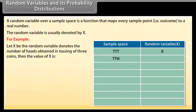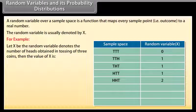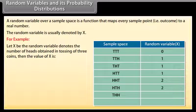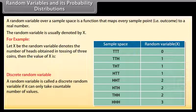Continuing the example: For HTT, X = 1; for HHT, X = 2; for HTH, X = 2; for THH, X = 2; for HHH, X = 3. A discrete random variable is one that can only take a countable number of values.